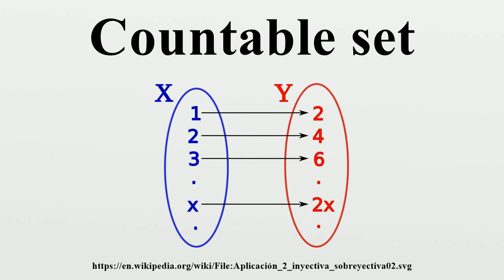Proposition: The integers Z are countable and the rational numbers Q are countable. Proof: The integers Z are countable because the function F: Z → N given by F(n) = 2n if n is non-negative and F(n) = 3^(-n) if n is negative is an injective function. The rational numbers Q are countable because the function G: Z × N → Q given by G(n, m) = n/m is a surjection from the countable set Z × N to Q. Furthermore, if each set in a countable collection is countable, their union is also countable.